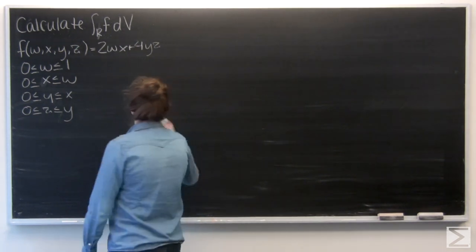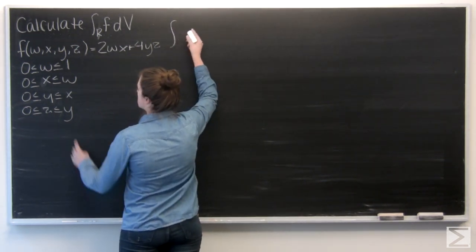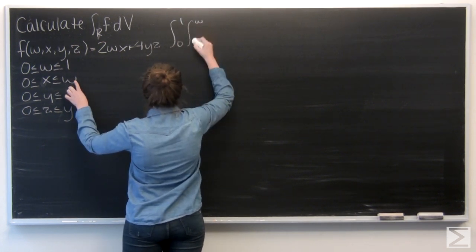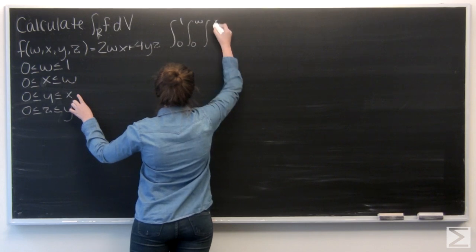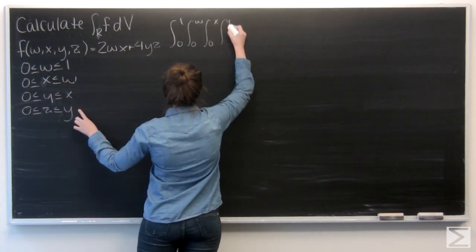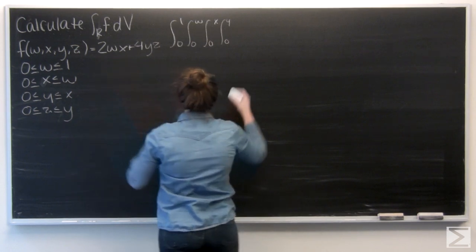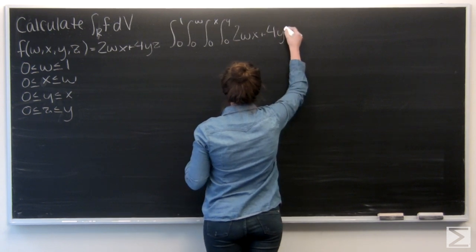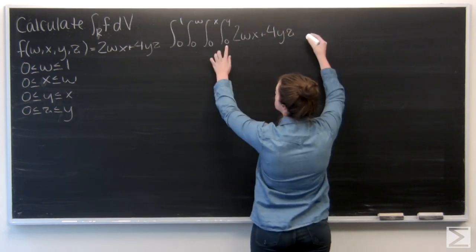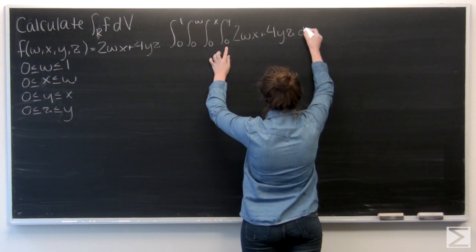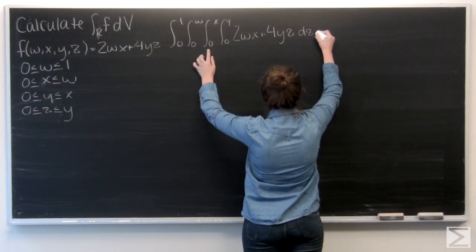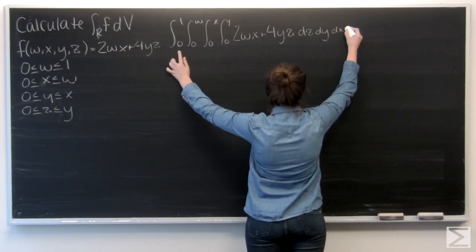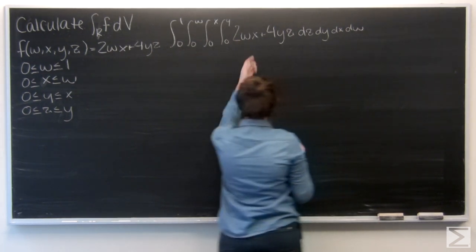And let me rewrite my bounds. And go ahead and write my function in. And match everything up. So dz, dy, dx, dw. Okay, and let's go ahead and start.